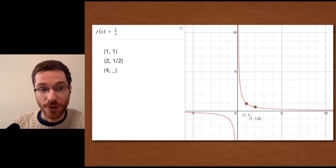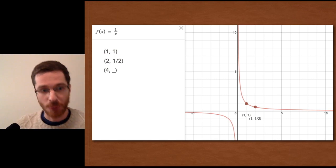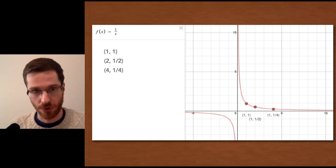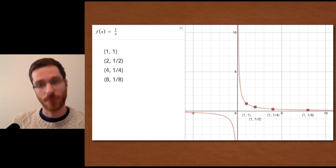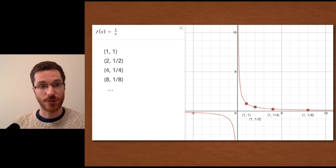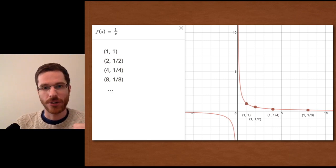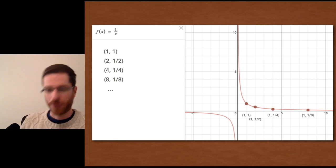If the input of the function is four, then the output of the function is one over four. And similarly with eight and so on. So this continues. Whatever number you put into the function, it outputs one over that number.